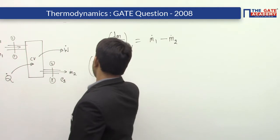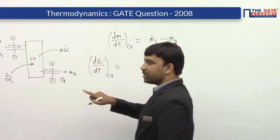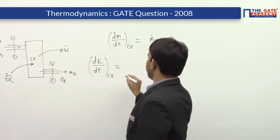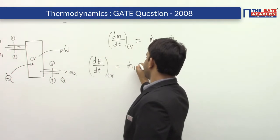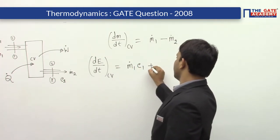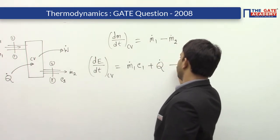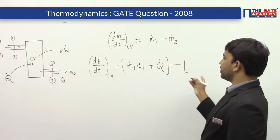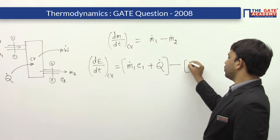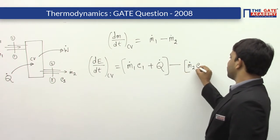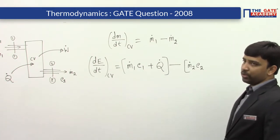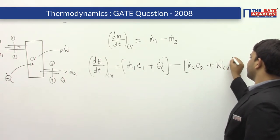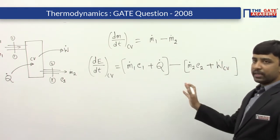Similarly, the energy conservation equation is written as: the rate of change of energy of this control volume equals energy entering the control volume — a fluid stream entering brings energy, plus heat supplied to the control volume — minus energy leaving the control volume. Energy leaving includes the fluid stream coming out at rate m2 dot with specific energy E2, plus any work output from the control volume. This is the energy balance equation.